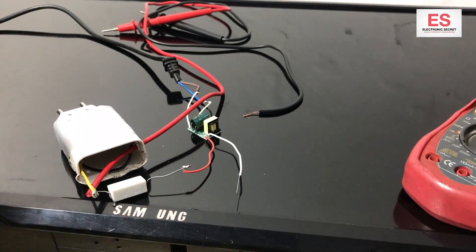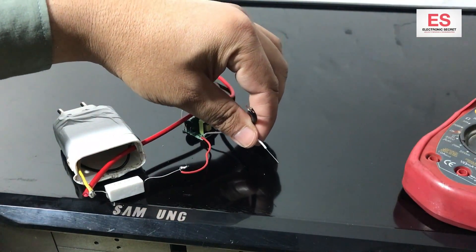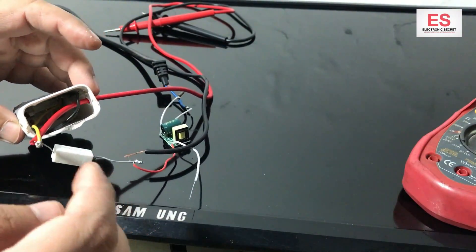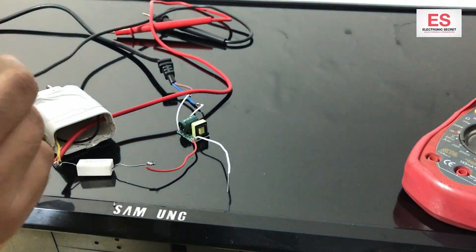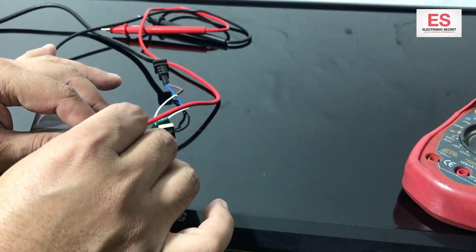Take the black probe, insert it from the hole that I have made earlier in the casing. Now take the second output wire that is ground, joint them.